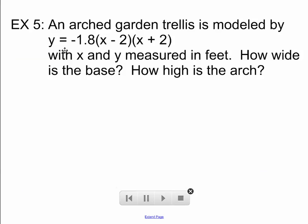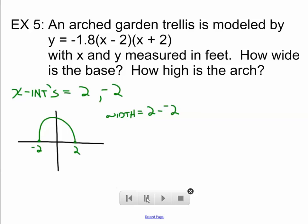Okay, let's use this same concept to solve this real world problem. An arched garden trellis is modeled by this equation. With x and y measured in feet. How wide is the base and how high is the arch? Okay. Well, I know that its x-intercepts are 2 and negative 2. If I make a real rough sketch of that, it might look something like this. There's our arched trellis right there. As far as the width is concerned of the trellis, it's this distance right here. So, the distance between our x-intercepts, which we can find just simply by subtracting, 2 minus negative 2, which is a distance of 4 feet. The width is 4 feet.